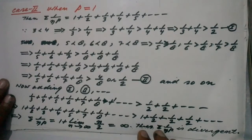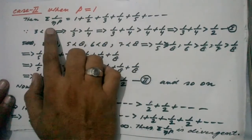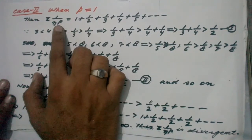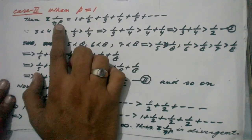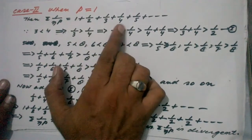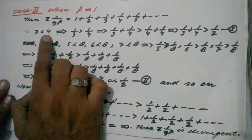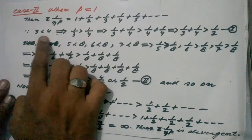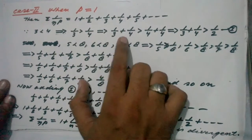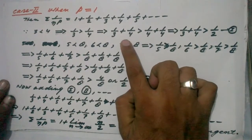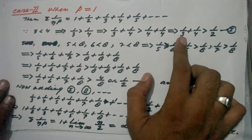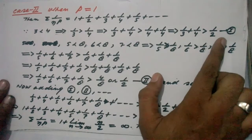Now let us consider Case 2, when p = 1. Then sigma 1/n^p becomes sigma 1/n, which is 1 + 1/2 + 1/3 + 1/4 + 1/5 + ... to infinity. Since 3 < 4, we have 1/3 > 1/4. Adding 1/4 on both sides gives 1/3 + 1/4 > 1/4 + 1/4 = 1/2. Let this be equation number I.